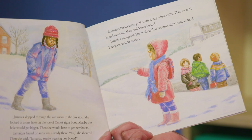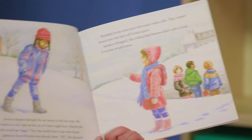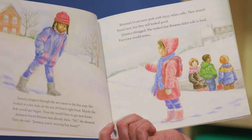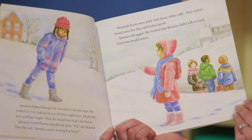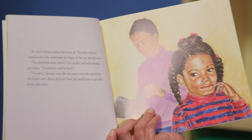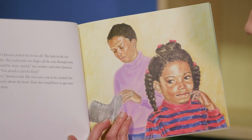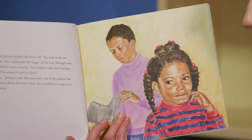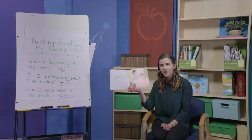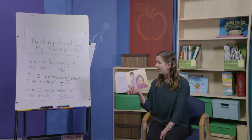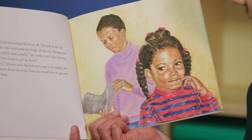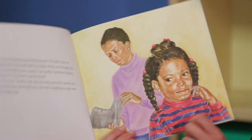'Brianna's boots were pink with fuzzy white cuffs. They weren't brand new, but they still looked good. Jamaica shrugged. She wished that Brianna didn't talk so loud. Everyone would notice. At school, Jamaica jerked the boots off. The hole in the toe ripped wider. She could poke her finger all the way through now. You should be more careful, her mother said when Jamaica got home. I'm afraid it can't be fixed.' I'm going to pause and think — can I read most of these words? Yes, I can. I know it's a just right book. And here, what's happening now? There's a problem — Jamaica's old boot has a hole in it.